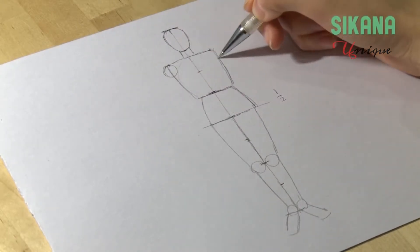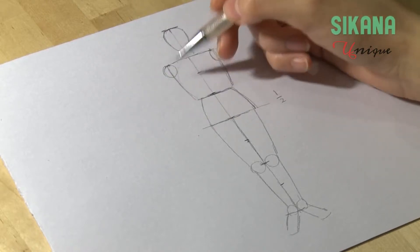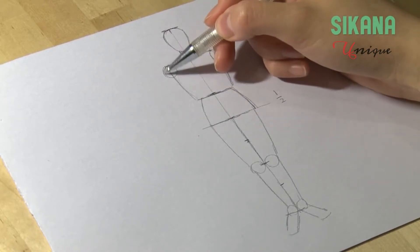Now you only have the arms left to draw. The first part stops at the elbow and the second stops at the wrist.